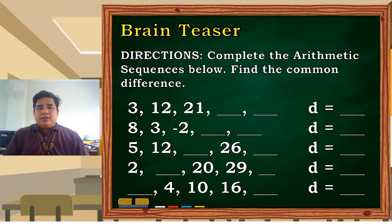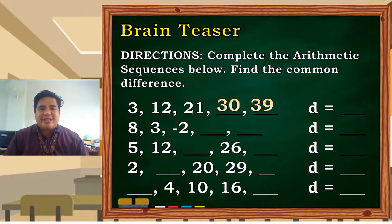3, 12, 21. The next number is 30 and followed by 39. So how did we get 30 and 39? We have a common difference, and our common difference here is 9. What about 8?